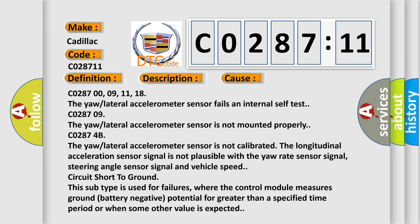C0287-4B: The yaw lateral accelerometer sensor is not calibrated. The longitudinal acceleration sensor signal is not plausible with the yaw rate sensor signal, steering angle sensor signal and vehicle speed.